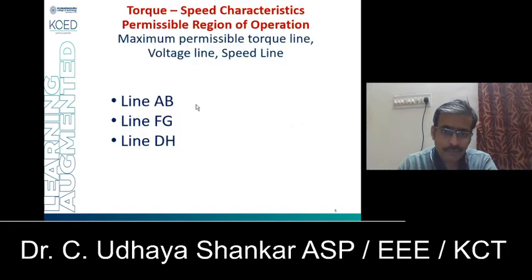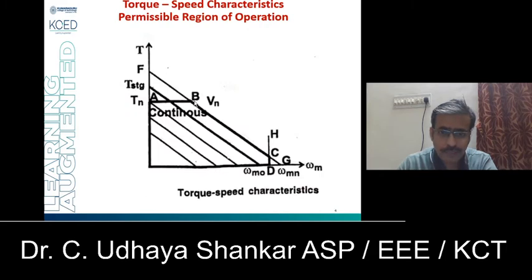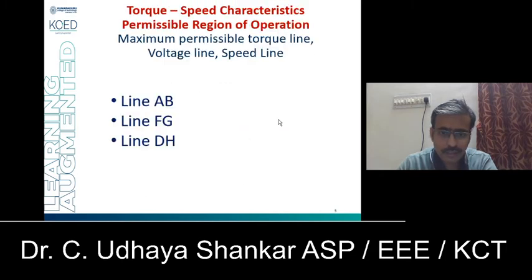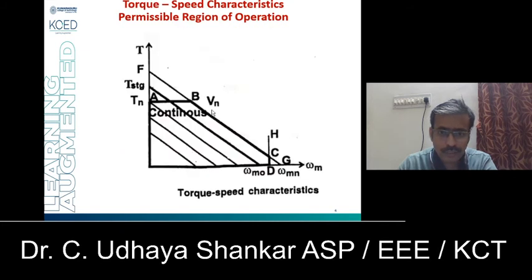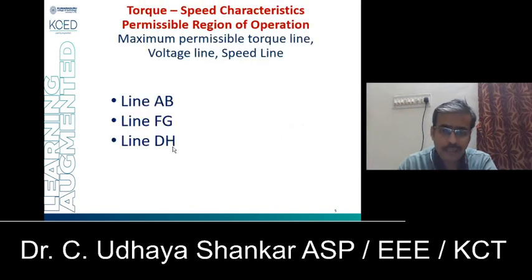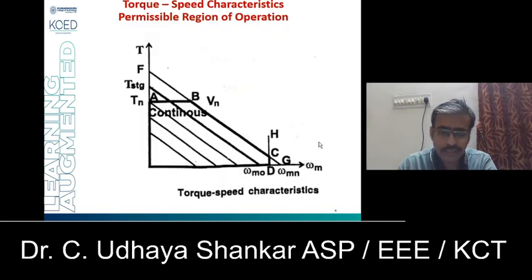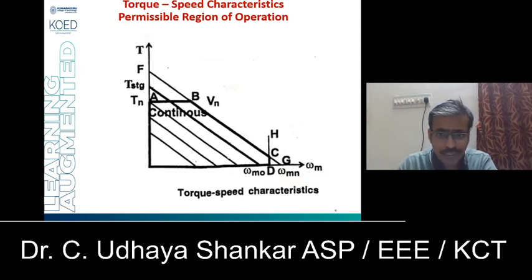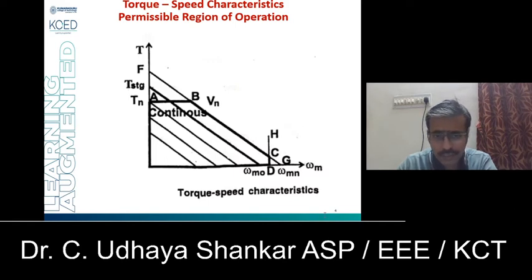We are going to discuss three different lines: line AB, line FG, and line DH. Line AB is parallel to the x-axis and represents the maximum permissible torque line, which corresponds to the maximum permissible current IN. This line AB represents the maximum permissible torque of any BLDC machine.